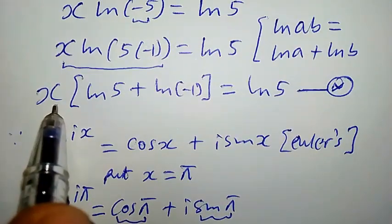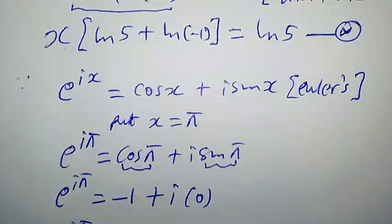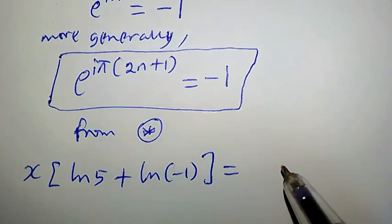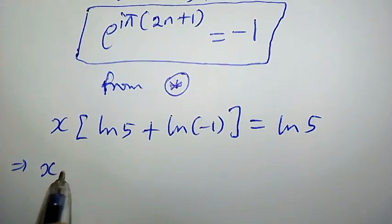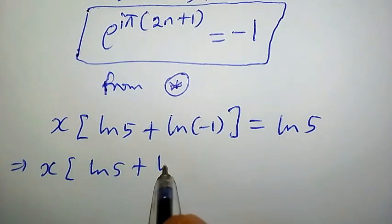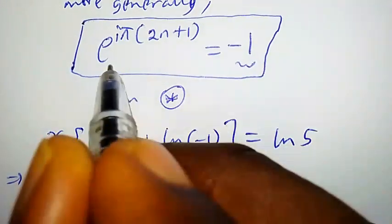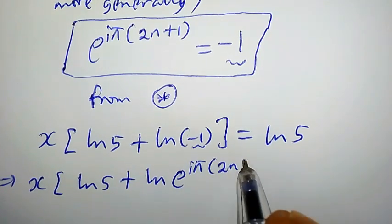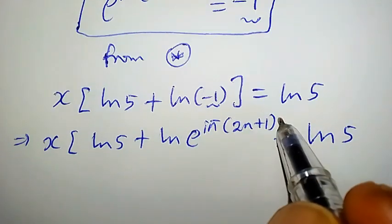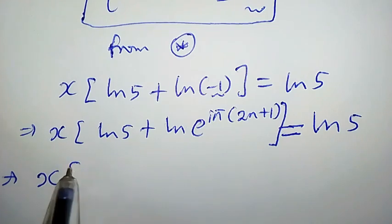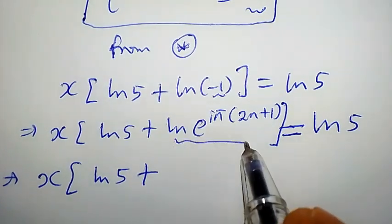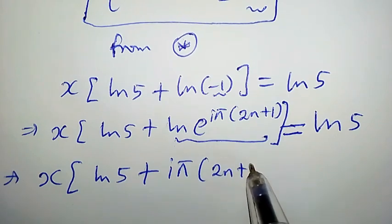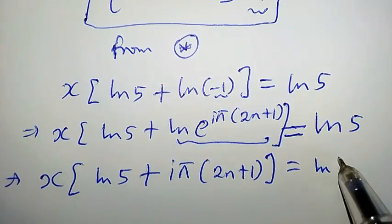From equation star: x · ln(5) + ln(-1) = ln(5). We now replace ln(-1) with e^(iπ(2n+1)), giving x · [ln(5) + ln(e^(iπ(2n+1)))] = ln(5). Since ln(e^(iπ(2n+1))) = iπ(2n+1), this becomes x · [ln(5) + iπ(2n+1)] = ln(5).